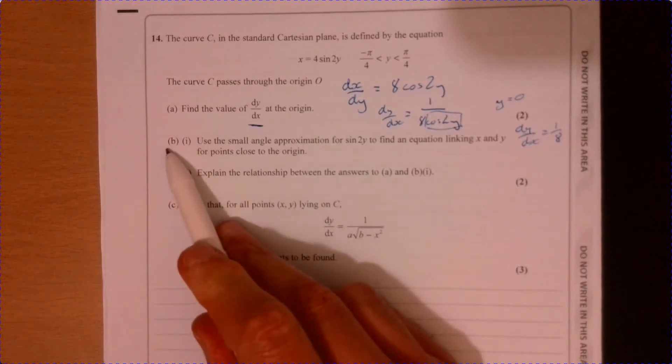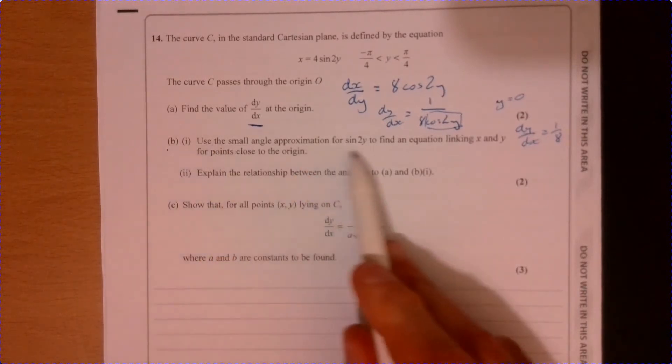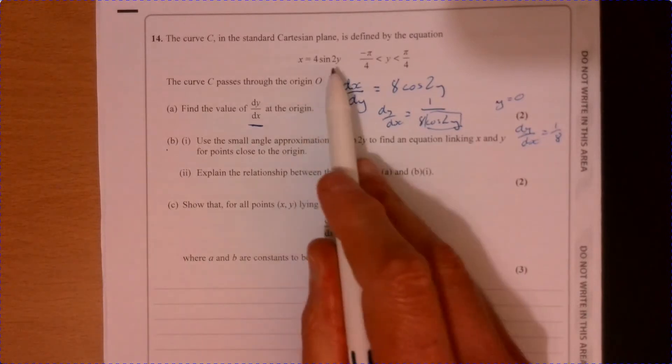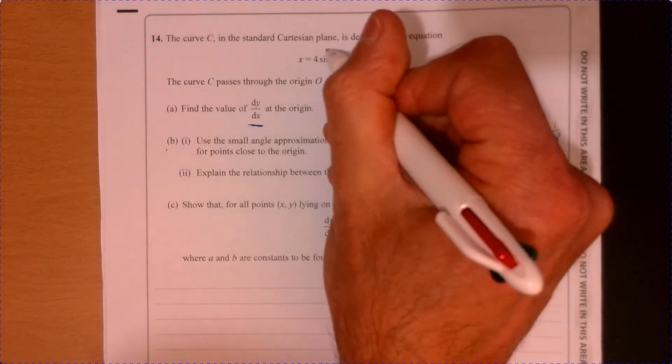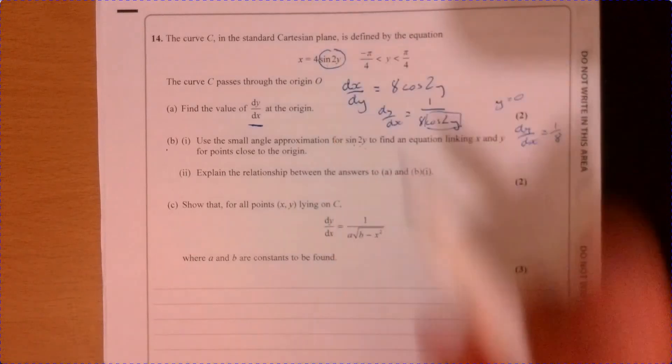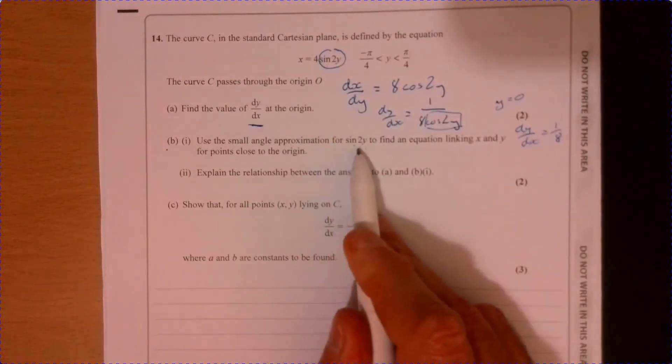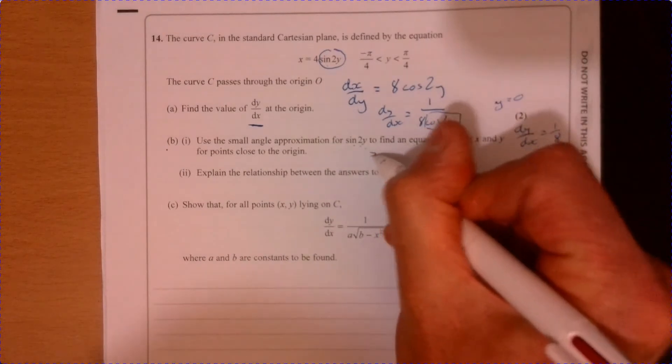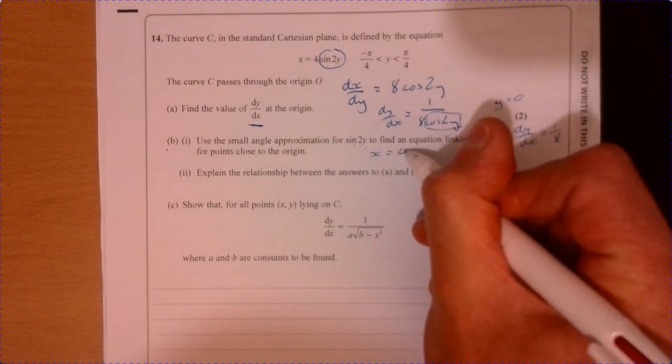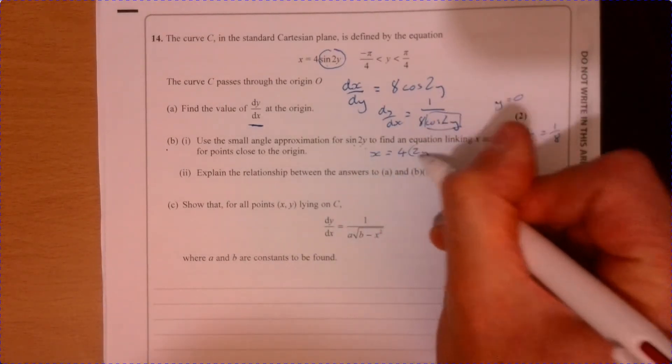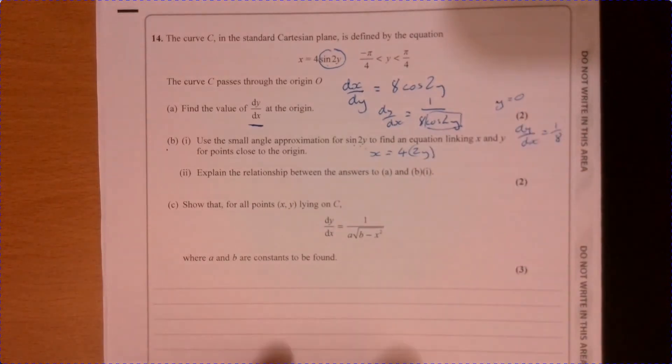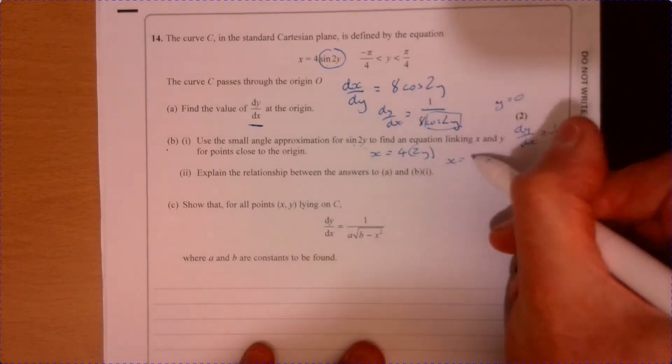So let's have a look at part B. It says use small angle approximation for sine 2y. So if we just, in here, let's just go back and look at that. So small angle approximation is just going to be 2y there. So in other words, x equals 4 times 2y. So x equals 8y.